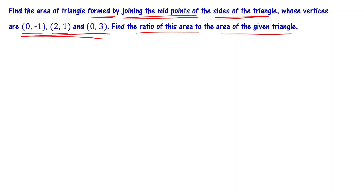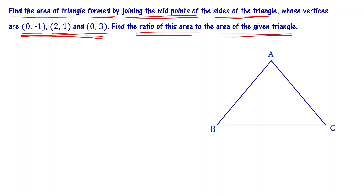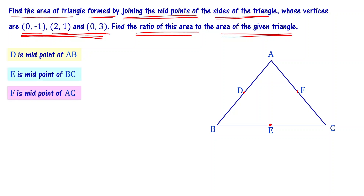We have three points and three sides. D is the midpoint of AB, F is the midpoint of AC, and E is the midpoint of BC. If you connect D and E, D and F, and E and F, you are forming a triangle — the second triangle.